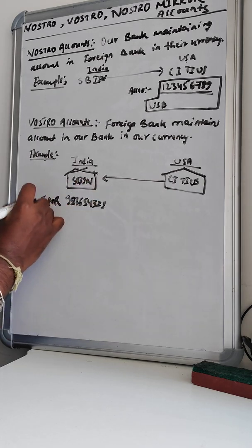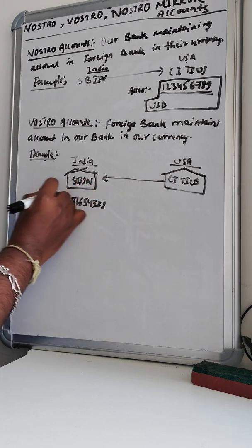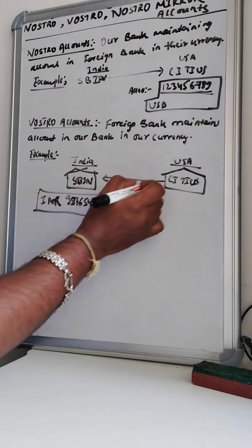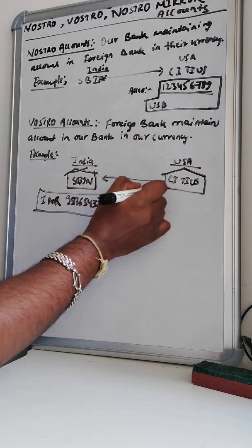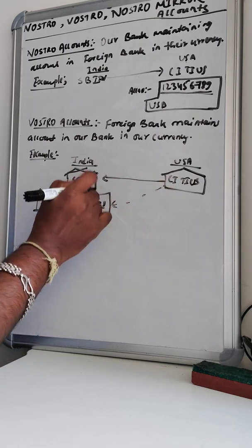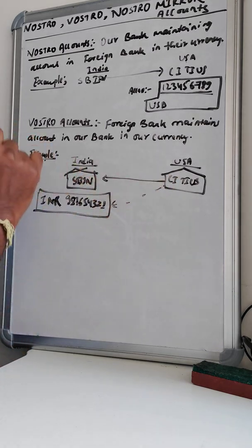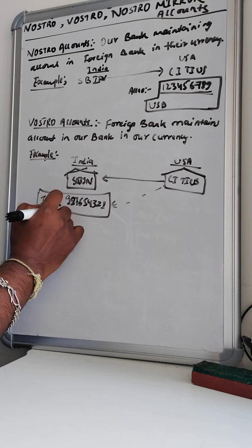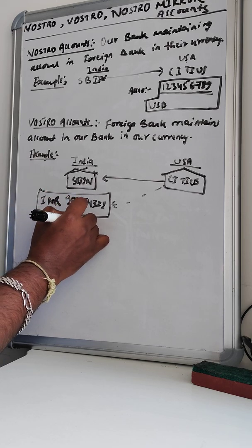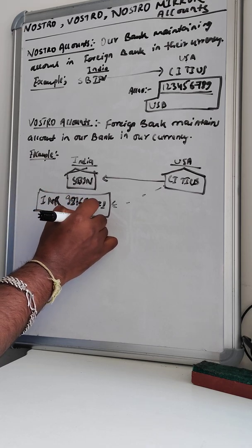This account is of Citibank US, maintained at SBI India, and this is called a Vostro account.